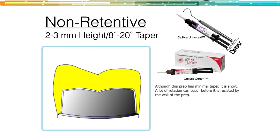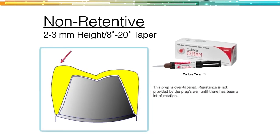Another type of non-retentive crown might be very tall, but the walls of the preparation are too converging. This is my 'ice cream cone prep' and I really want to avoid this at all costs. Unless you're going to bond this crown in, and even if you bond it, you really have to watch the occlusal forces because the resistance is just not there. These are the different types of retention to watch for when you're preparing crowns. You have to understand what you're going to end up with, because that will set up the strategy for cementation.